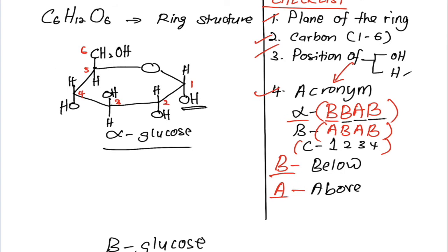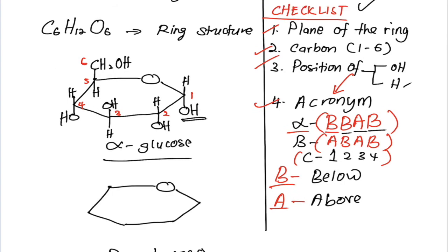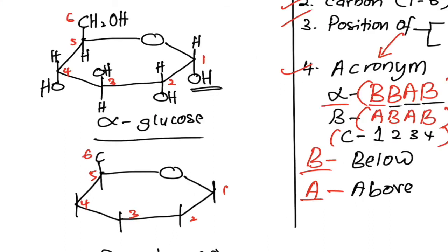Now we proceed with beta glucose. First, we will sketch the plane of the ring. Step number two, we will indicate carbon number one to number six. And at carbon number six, it attaches to CH₂OH.